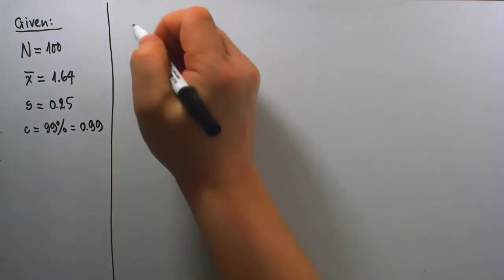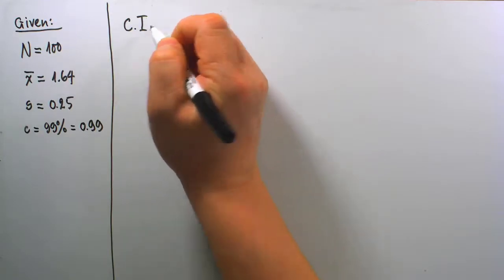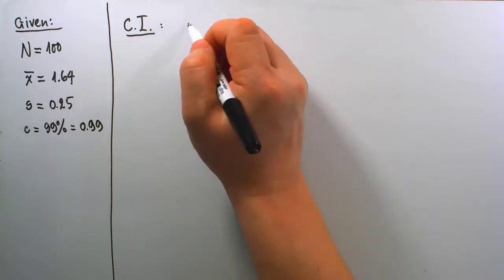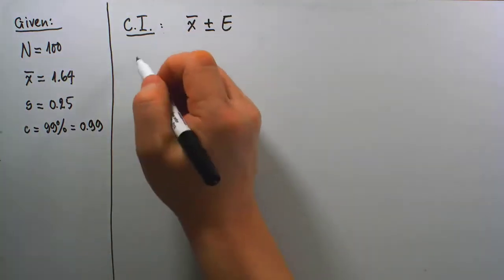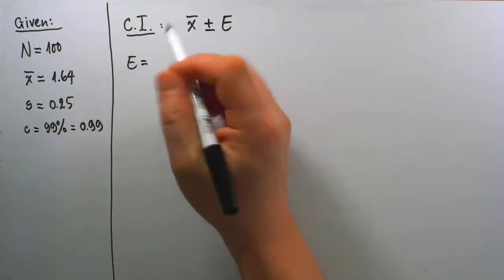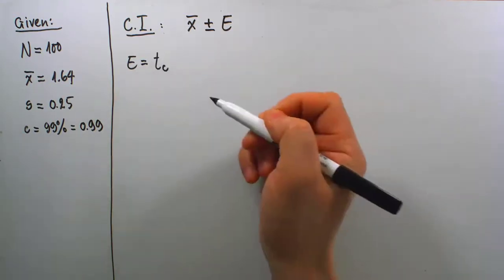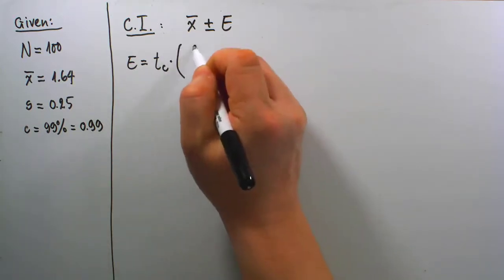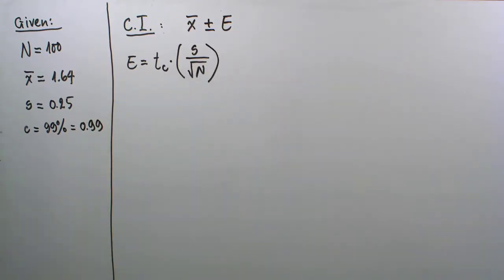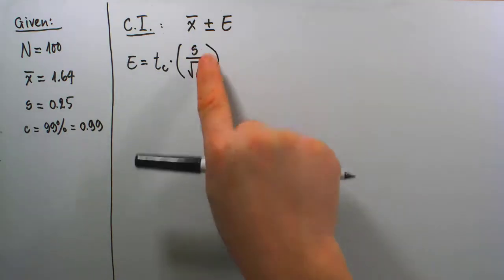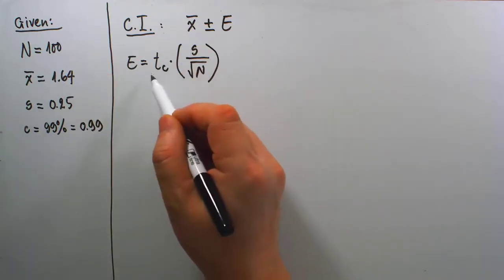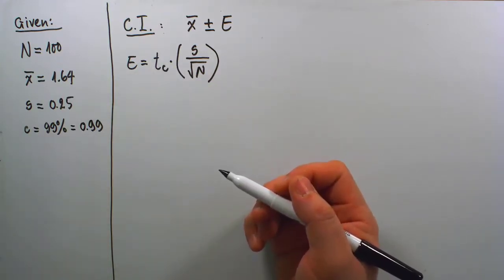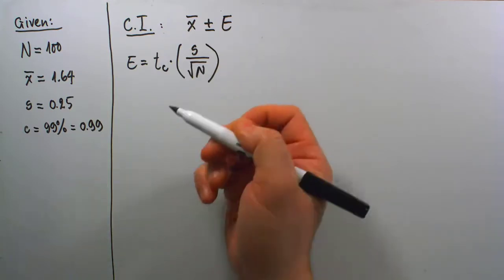Any confidence interval to estimate a population mean must be in the form of the sample mean plus and minus the margin of error: x̄ ± E. Margin of error, as we've seen throughout the lessons, requires the formula E = tc × (s/√n). I don't need to rush into writing down s and n because they're simply given already. My main focus now is to calculate the tc value.